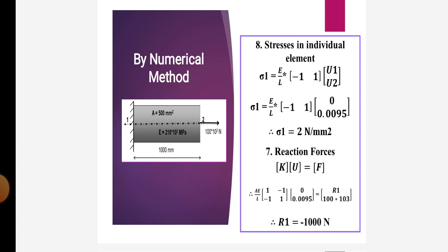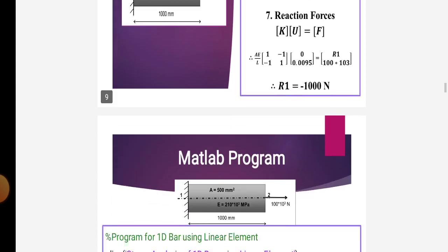In the next step, we calculate the reaction forces using K into U is equal to F. So R1 is equal to minus 1,000 Newton.